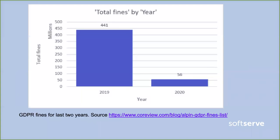Looking at total GDPR fines over the last two years: in 2019, the total amount was 421 million dollars. In 2020, it's about 56 million so far at the current date, but will likely grow by year end. You can see that companies are starting to actually take compliance seriously.